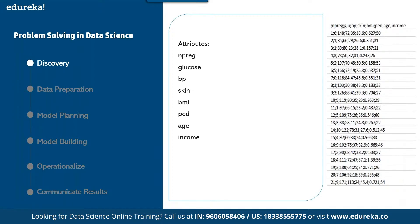Here's a small example: a doctor gets data from the medical history of a patient. We have different attributes — n_preg means number of times pregnant, glucose means plasma glucose concentration, BP means blood pressure, skin means triceps skin fold thickness, BMI means body mass index, PED means diabetes pedigree function, age means age, and income means income. Income is an irrelevant attribute in the prediction of diabetes.